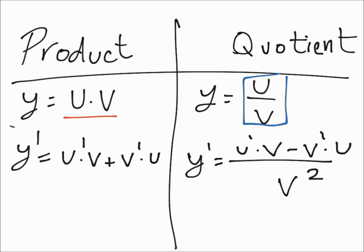Those functions will be u and v. In both cases there will be a mix between u and v to obtain the derivative. In the product rule it's going to be u prime times v plus v prime times u — the prime just means the derivative of that function. For the quotient rule it's going to be u prime times v minus v prime times u over v squared. There's a minus, which means the order actually matters, unlike the product rule.